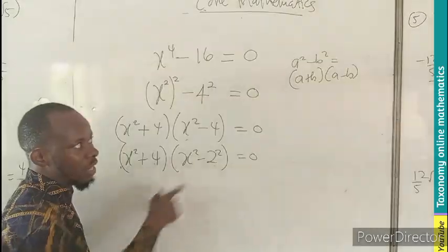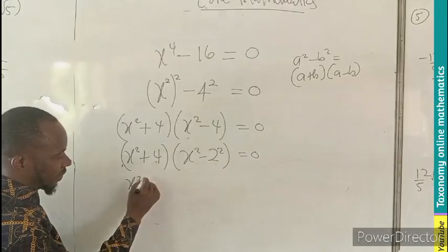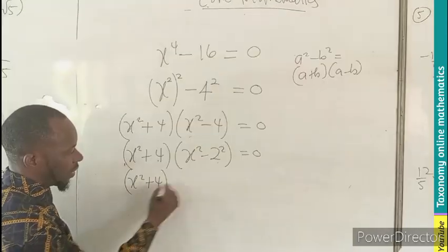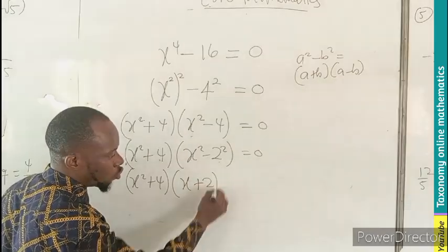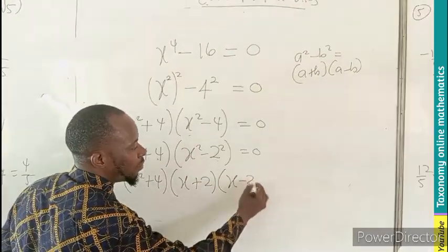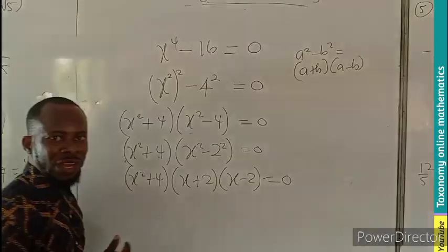You can see this is also a difference of two squared. So maintaining this, I still get this, into bracket x plus 2, x minus 2, equals to 0.